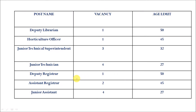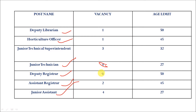The next post is Deputy Librarian — for those who have done a degree or B.Sc in Library Science. For Horticulture, those with B.Sc or B.Tech in Horticulture can apply. There are also posts for Junior Technician, Junior Assistant, Deputy Registrar, and Assistant Registrar requiring M.E./M.Tech with three to five years experience.